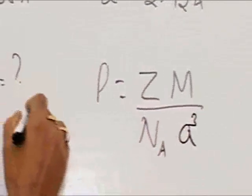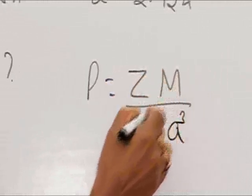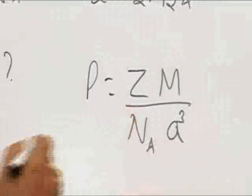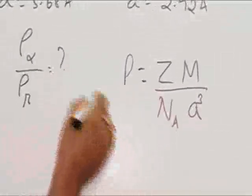As far as this problem is concerned, M and NA will not affect the ratio because it's the same element. So when we create two equations and take the ratio...